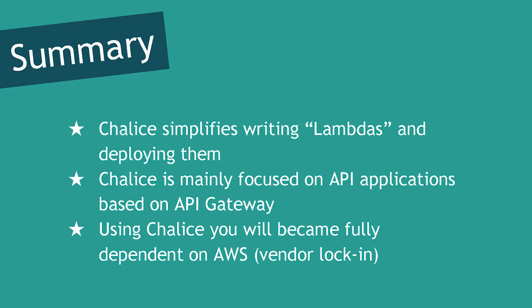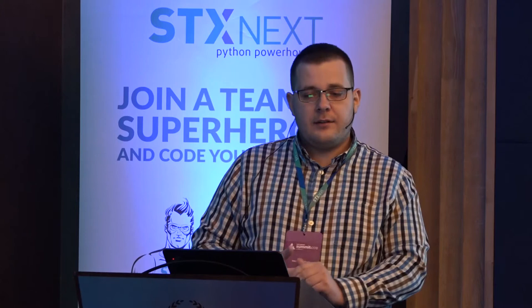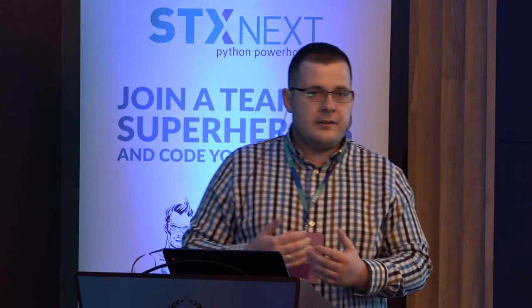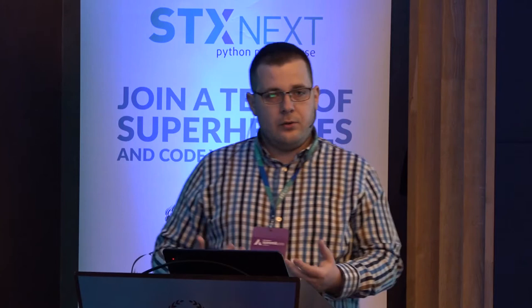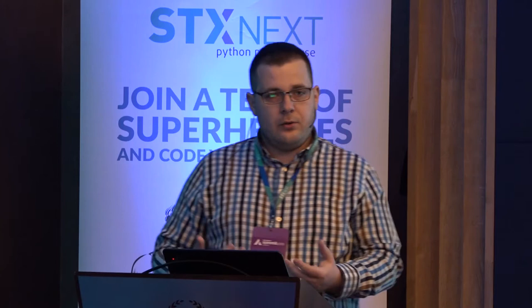To summarize: Chalice simplifies writing and deploying Lambda functions. It's not a full framework for building huge applications — it's mainly focused on creating APIs behind API Gateway. The drawback of using Chalice is vendor lock-in: if someday you want to move to another platform like Google or Azure, you'll have to rewrite your whole thing for the new platform. And that's it — any questions?